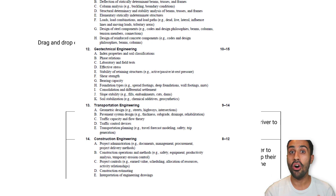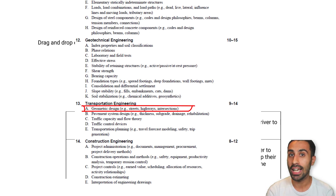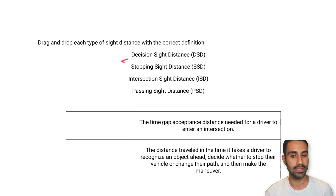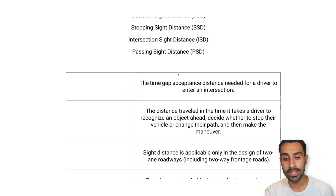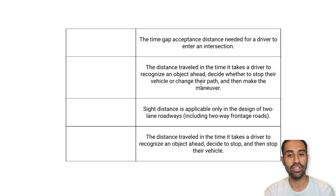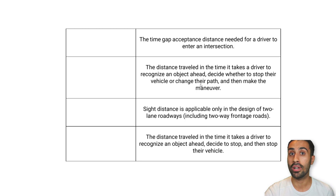Here's a conceptual question about geometric design sight distance. We're told to drag and drop each type of sight distance with the correct definition. We have the decision sight distance, the stopping sight distance, intersection sight distance, and the passing sight distance. We want to take each one and drag it to the correct place. Try this on your own and pause the video, then check your work.